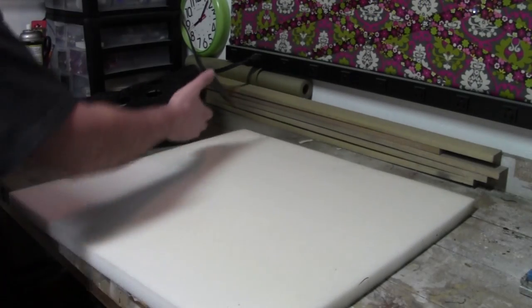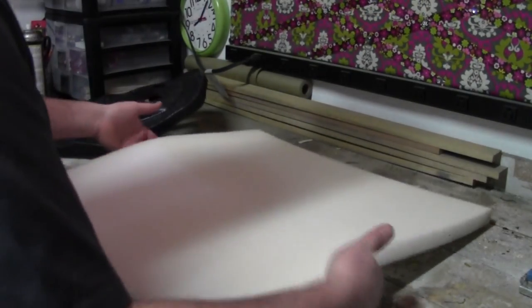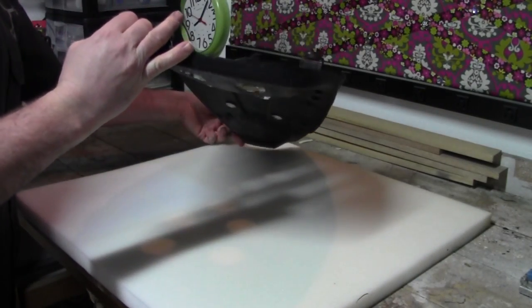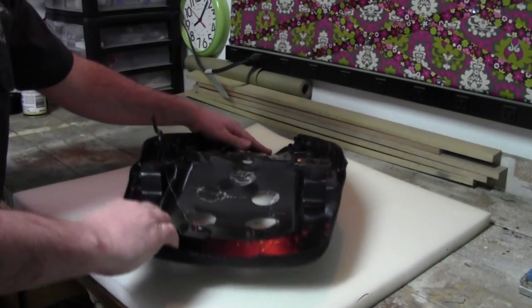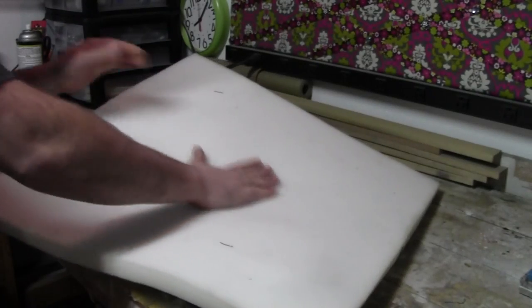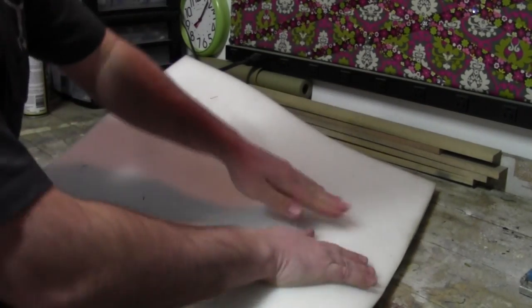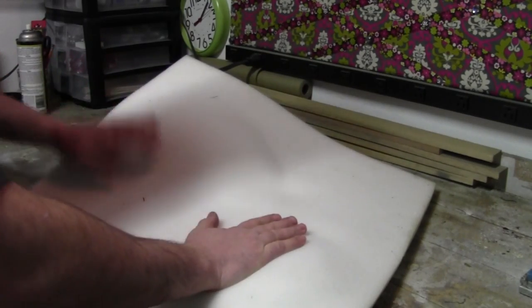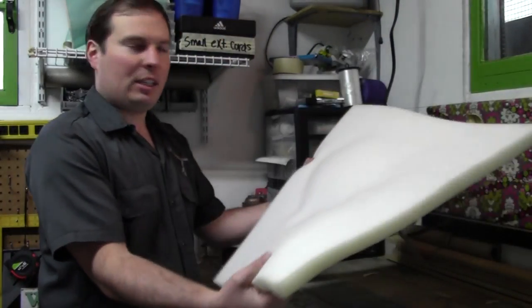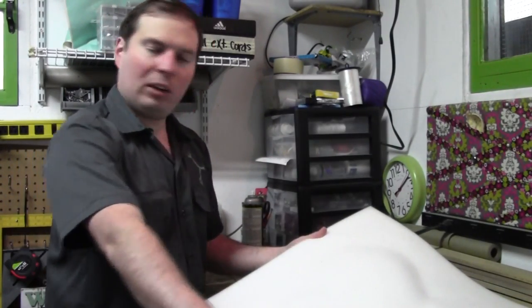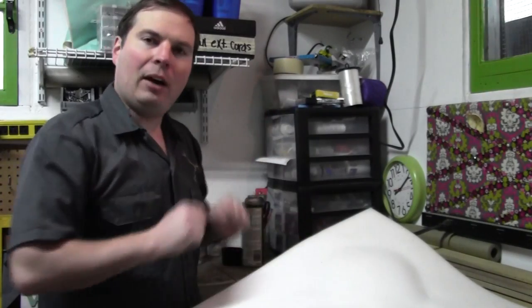Okay, after a little bit of dry time, we're ready to put these two together. Well, we have it all stuck. We'll let this cure, and we'll do the same thing to the thicker piece of foam. Put a layer of glue on this side, and a layer of glue on the other piece of foam, and then we'll stick it down on top.